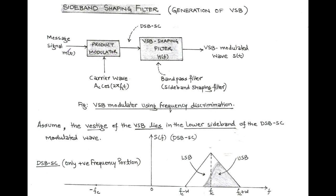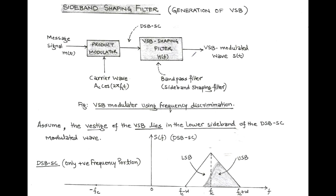The inputs of the product modulator are the message signal and the carrier signal. We get the output as the product of message signal m(t) and carrier signal Ac·cos(2πFct), which is a double sideband suppressed carrier signal. This DSB-SC signal is applied to the specially designed sideband shaping filter having transfer function H(F), and its properties convert the DSB-SC wave into a vestigial sideband modulated wave S(t).